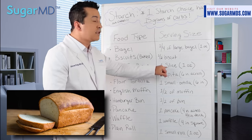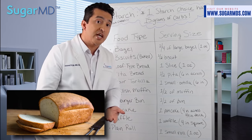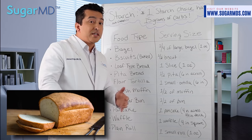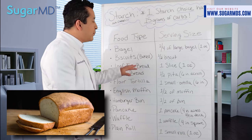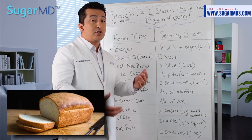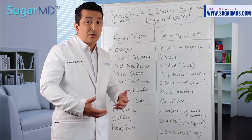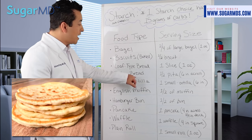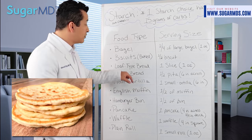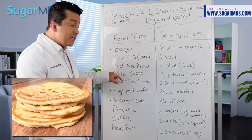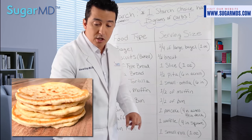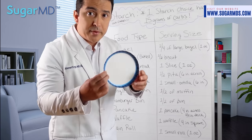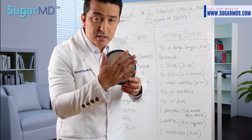For loaf-type bread, one slice is typically 15 grams. If you do a turkey sandwich you need two slices, so that's 30 grams. For pita bread, half a pita — about six inches across — is 15 grams, so a whole pita is 30 grams of carbs.